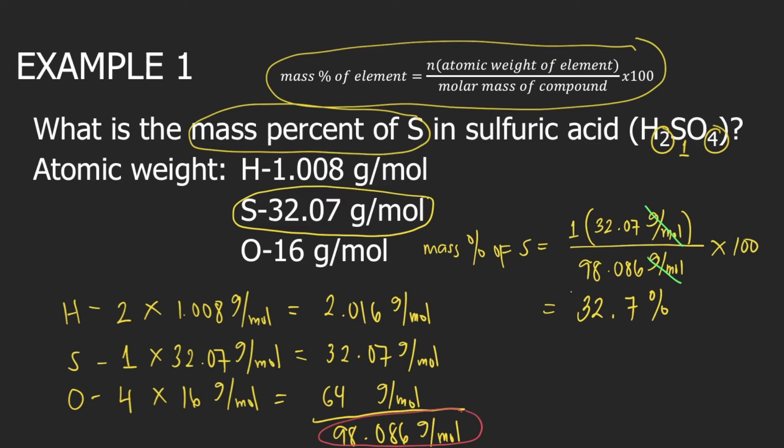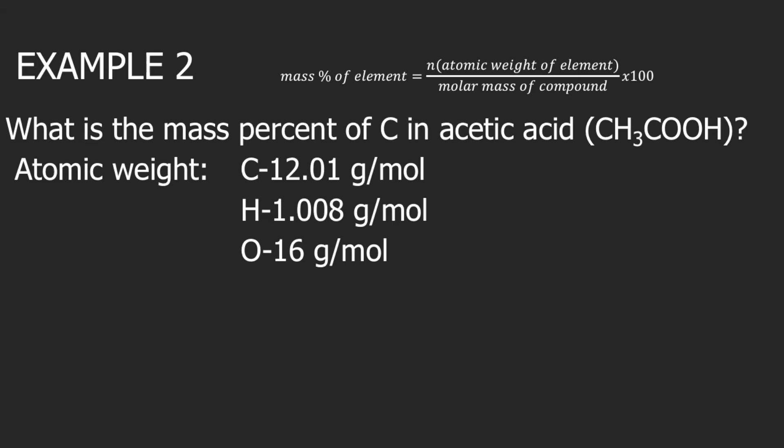And this is the mass percent of sulfur in sulfuric acid. Example 2: what is the mass percent of carbon in acetic acid? The chemical formula is CH₃COOH.